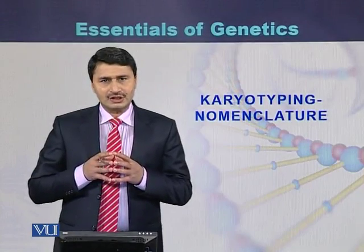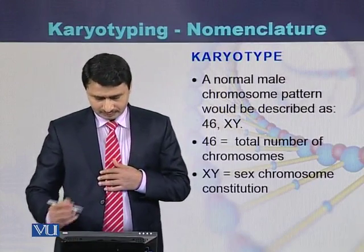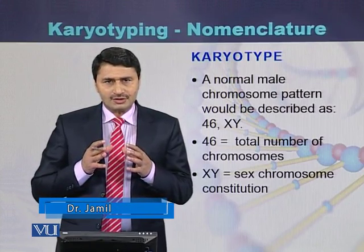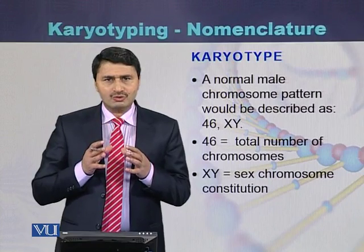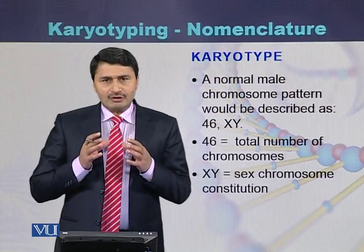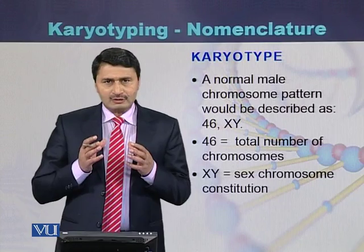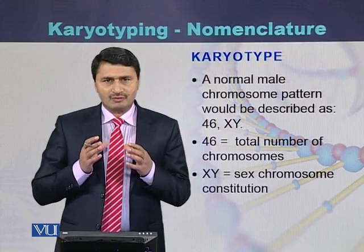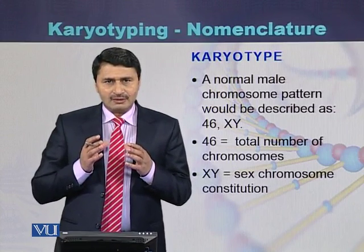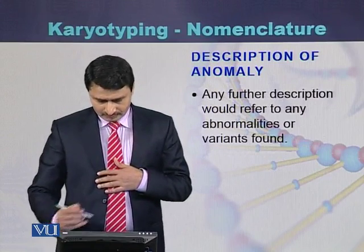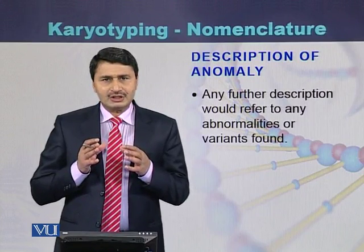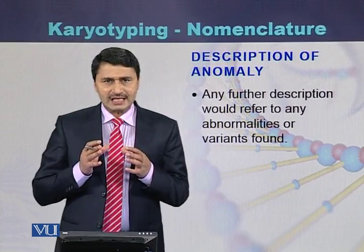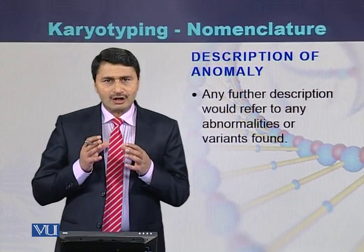Here we are typing the nomenclature of the chromosomes. If we take the example of a male, there are 46 chromosomes — 44 autosomes and two sex chromosomes. The nomenclature of a normal male is written as 46,XY where 46 is the total number of chromosomes and X and Y represent the sex chromosomes. If anything is written in addition to 46,XY, it represents an anomaly in the structure or number of chromosomes.